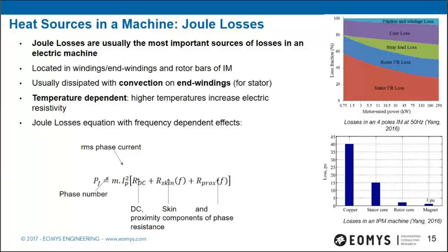Joule losses are usually the most important source of losses — for example, in a low-rated power motor they represent around 80% of total losses. They are located in windings or rotor bars for induction machines, and usually dissipated from the stator via convection on the end windings. They are very temperature dependent, since electric resistance increases with temperature. The Joule loss equation includes DC components on the left and frequency-dependent skin and proximity effect resistance terms on the right.